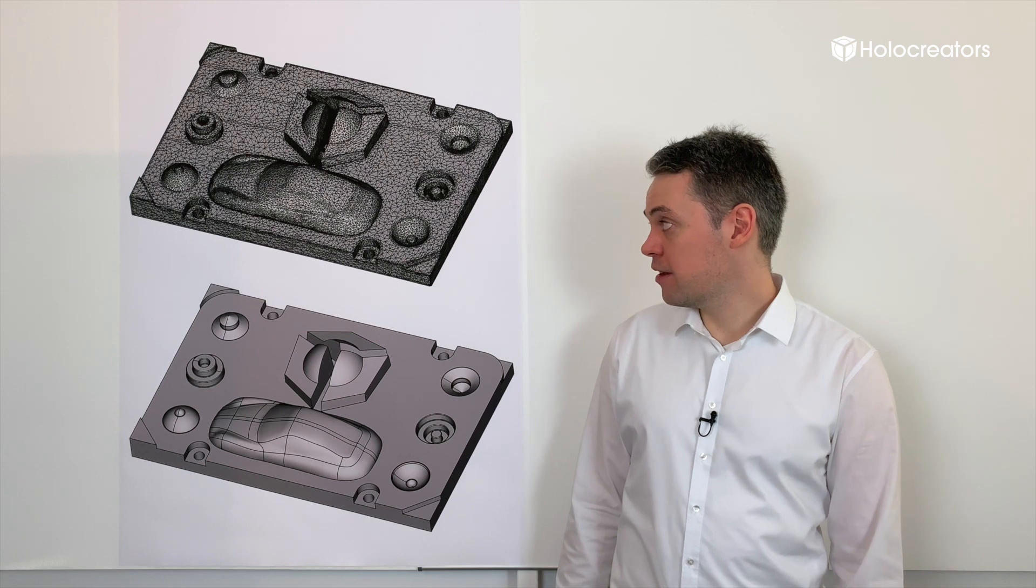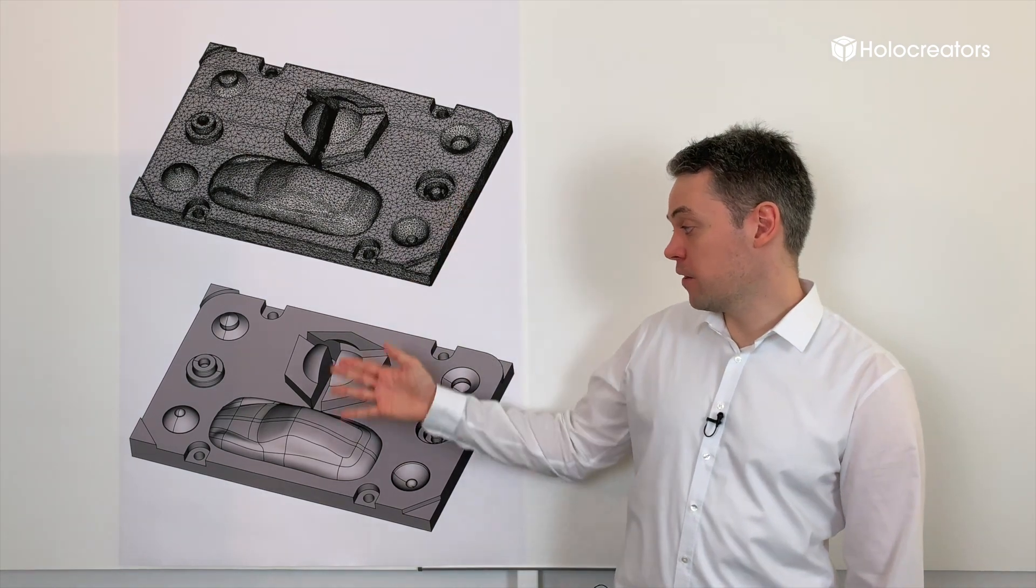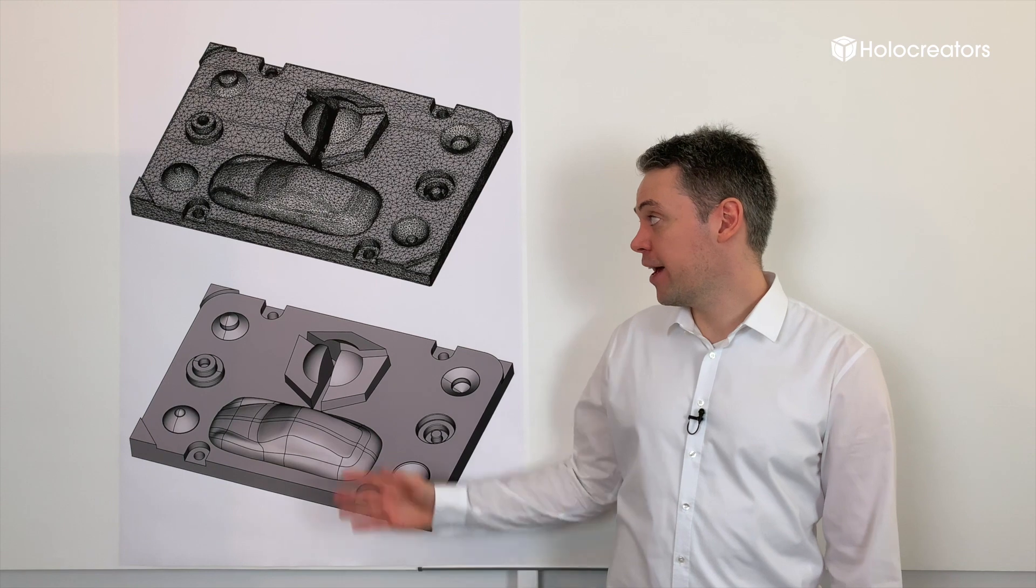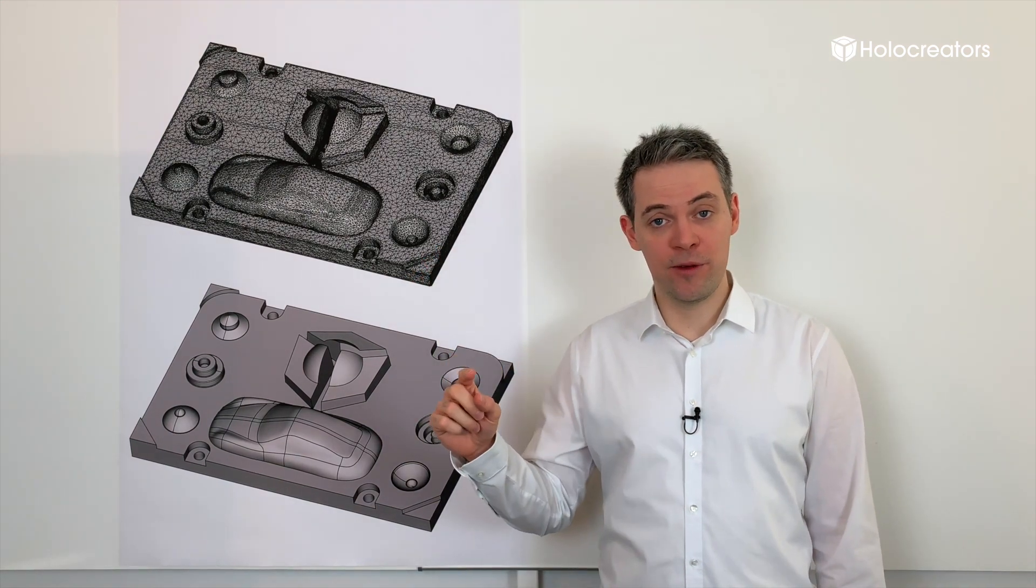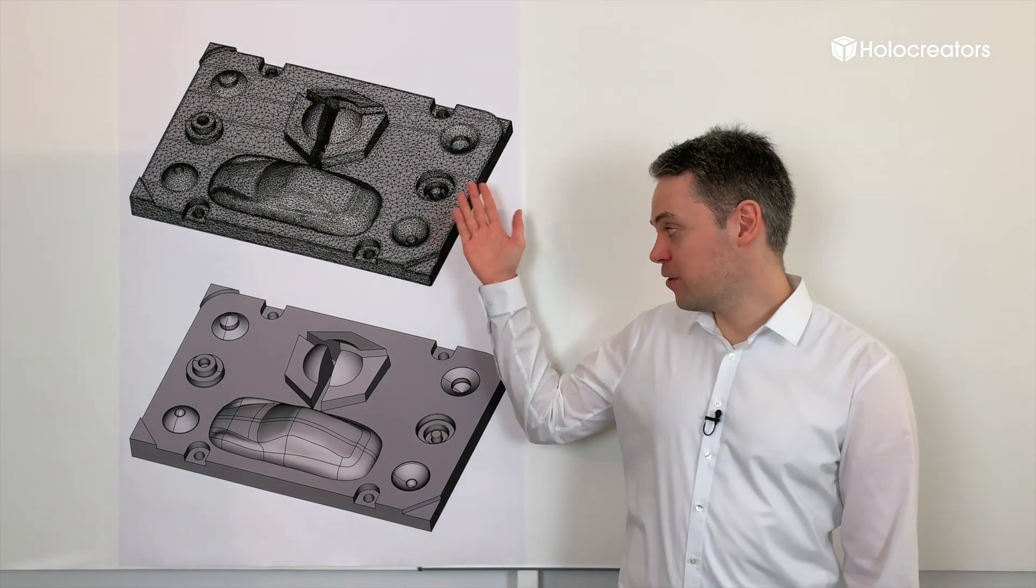A smaller file size means much less hardware resources on the CAD system. And of course, a major advantage is the low deviation between the two. On average, we have a deviation of just 0.05 millimeters to 0.1 millimeters between the 3D scan and the solid model.